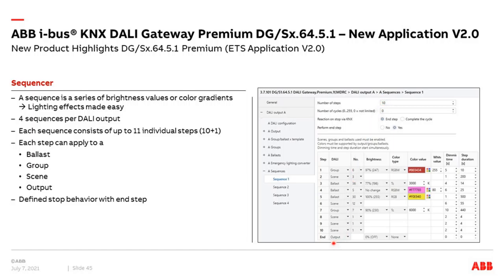The sequencer steps run through from first to last, cycle after cycle. When you send a group address with value zero, the sequencer stops. If 'perform end step' is set to yes, it jumps to the end step — for example switching off the light. The cycle count can also be set to zero for endless running.